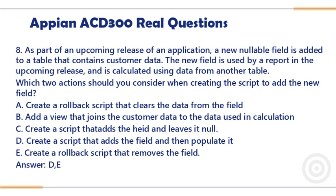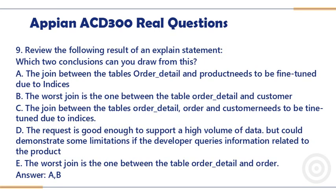Question 9. Review the following result of an EXPLAIN statement. Which two conclusions can you draw from this? A. The join between the tables order_detail and product needs to be fine-tuned due to indices. B. The worst join is the one between the table order_detail and customer. C. The join between the tables order_detail, order, and customer needs to be fine-tuned due to indices. D. The request is good enough to support a high volume of data, but could demonstrate some limitations if the developer queries information related to the product. E. The worst join is the one between the table order_detail and order. Answer: A and B.